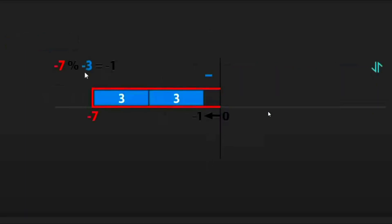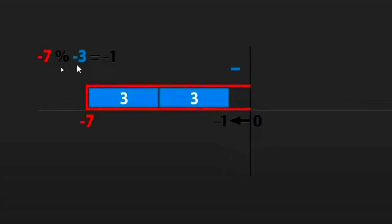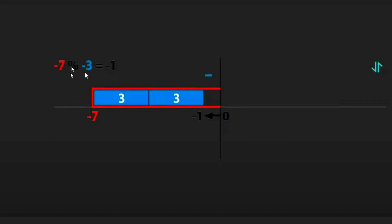Now for −7 % −3 = −1. The key rule remains: the divisor is negative, so the remainder must also be negative. We fill our glass — 3 values, then 6 values filled. If we placed another ice cube we'd cross to the positive side of the number line, but we must keep the remainder negative to match our negative divisor. So we stop at 6, and the remainder is −1. We don't overflow because doing so would give a positive remainder, which would be wrong.